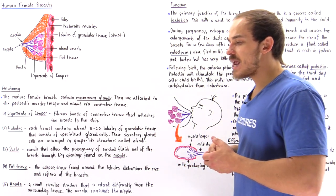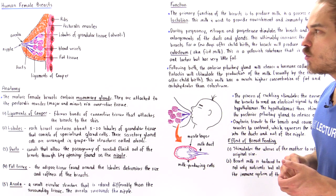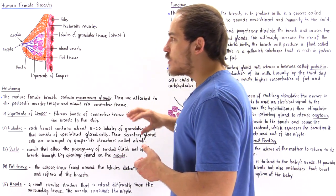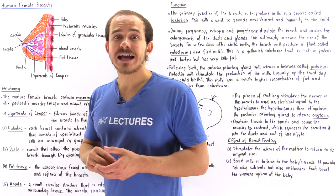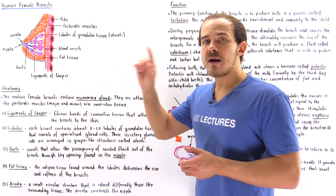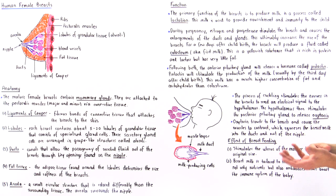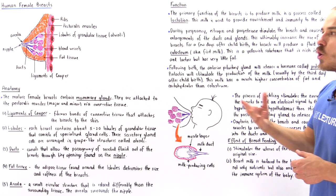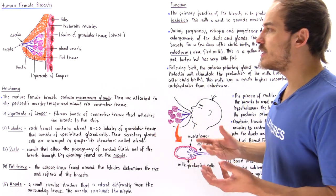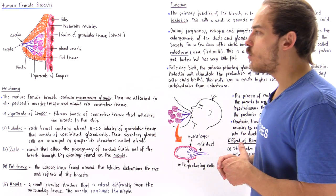The nipple also contains nerve endings. When the baby suckles on the nipple, the nerve creates action potentials — electrical signals — that propagate all the way to the hypothalamus. The hypothalamus then stimulates the posterior and anterior pituitary gland to release special hormones.